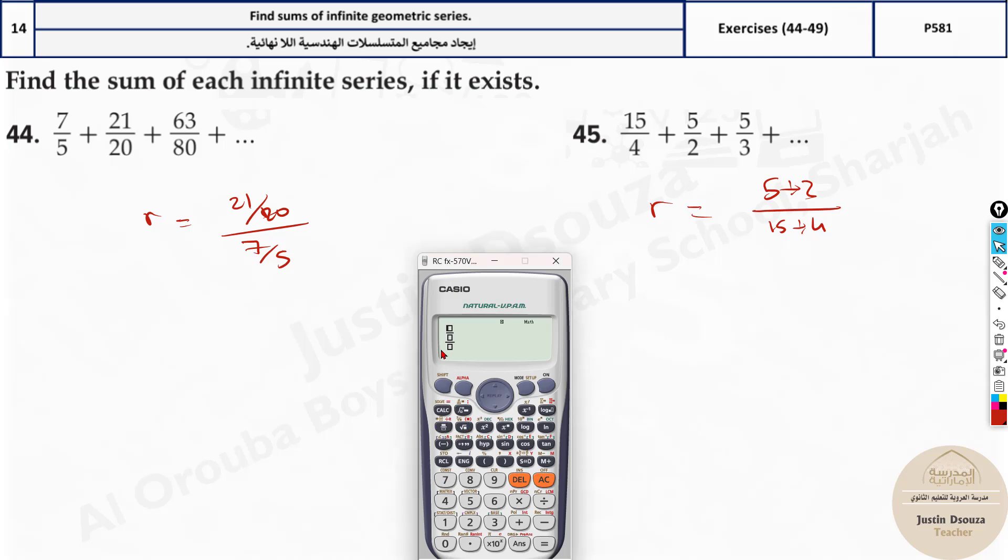Now when you're typing in the calculator, it's up to you. You can use the fraction again, like 21 divided by 20. And then over here, again use the fraction, and it will be 7 divided by 5. And the answer is 3 fourth. Or what I would generally suggest is, because this is less confusing, 21 divided by 20, and over here, you have 7 divided by 5. The answer will be the same. Now the answer over here is 3 fourth.